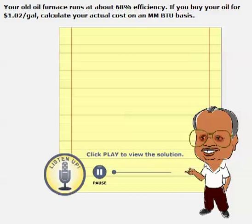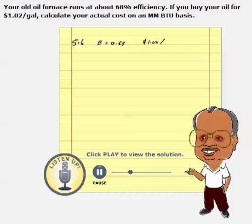In this problem, Problem 5.6, the old furnace runs at an efficiency of E equal to 0.68. We have the actual cost per unit fuel, which is $1.02 per gallon. We also know the calorific value, or heating value, in millions of BTUs — when you burn one gallon of oil, we get 0.13 million BTUs.